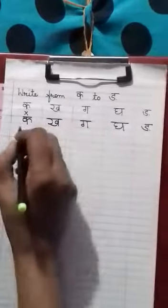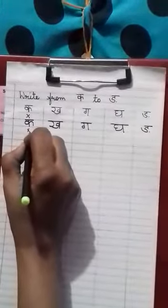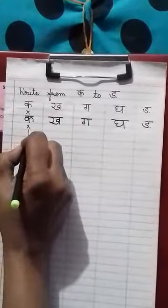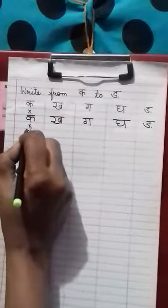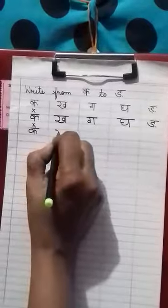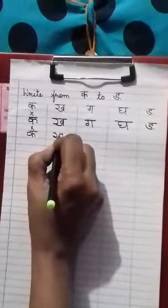Now, the same thing again you do, leave one line. Again ka. Every time you write it, say it. Then only you will remember. Gha.